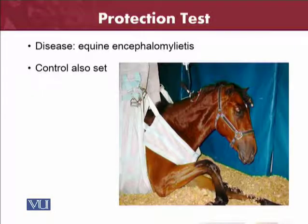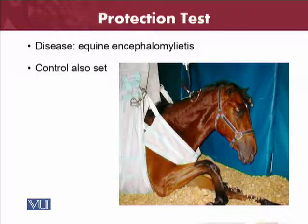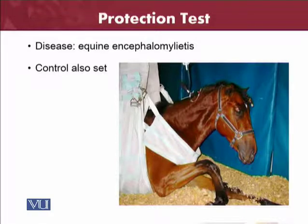We can take one more example — equine encephalomyelitis. We can use it because it is a disease of equines. Similarly, we will use equines as animal models along with controls, and see the results from different kinds of vaccines to see what kind of immunity is produced against that specific disease.